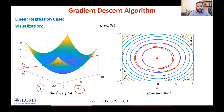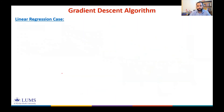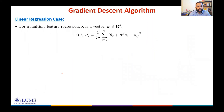We analyzed gradient descent for a single-feature linear regression problem. Now let's talk about multiple-feature linear regression, where x ∈ ℝᵈ with d features. The loss function is defined in the same way — nothing new.